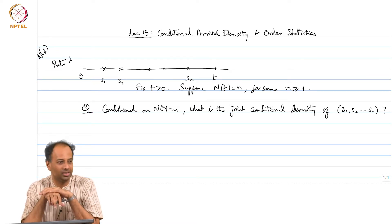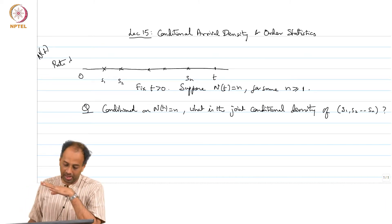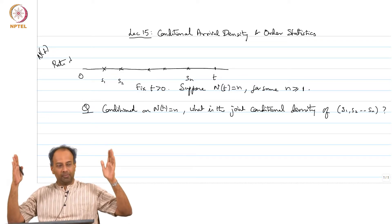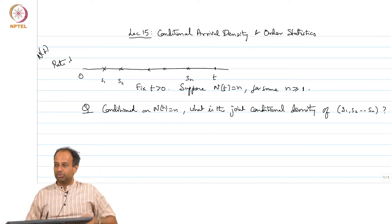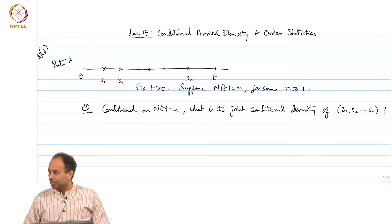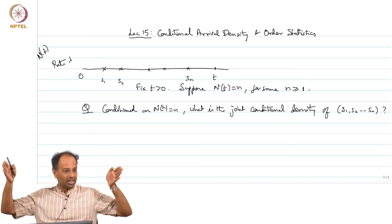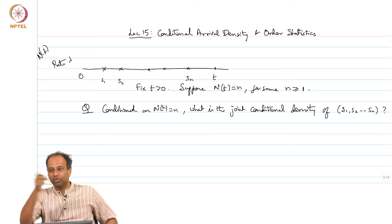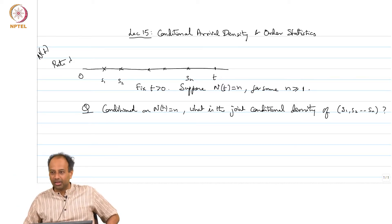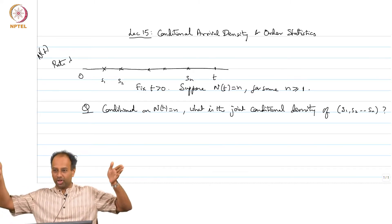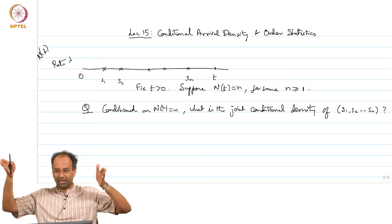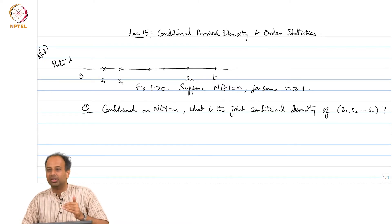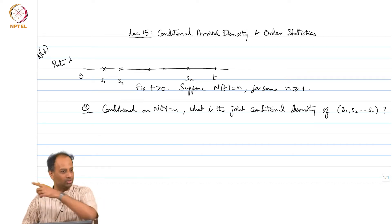For a Poisson process, I will tell you the main result as a theorem. If you fix the window 0 to t and I tell you that there have been n arrivals, then conditioned on N(t) = n, these arrivals behave as though they are iid uniform on 0 to t. It is statistically the same as though somebody threw n independent uniform points on 0 to t.